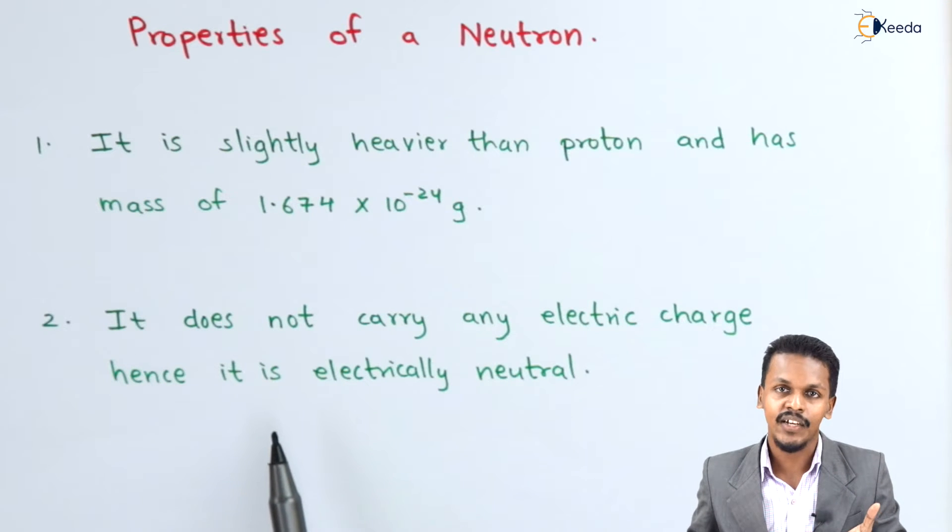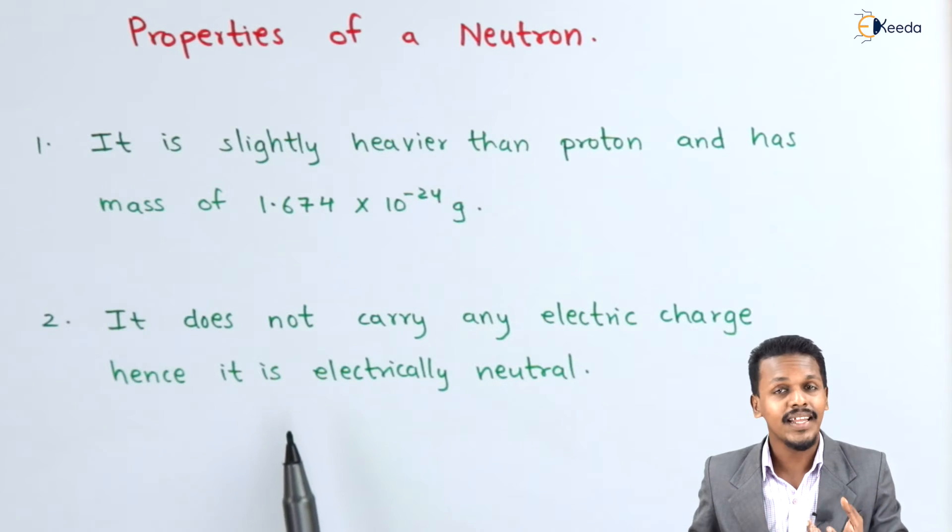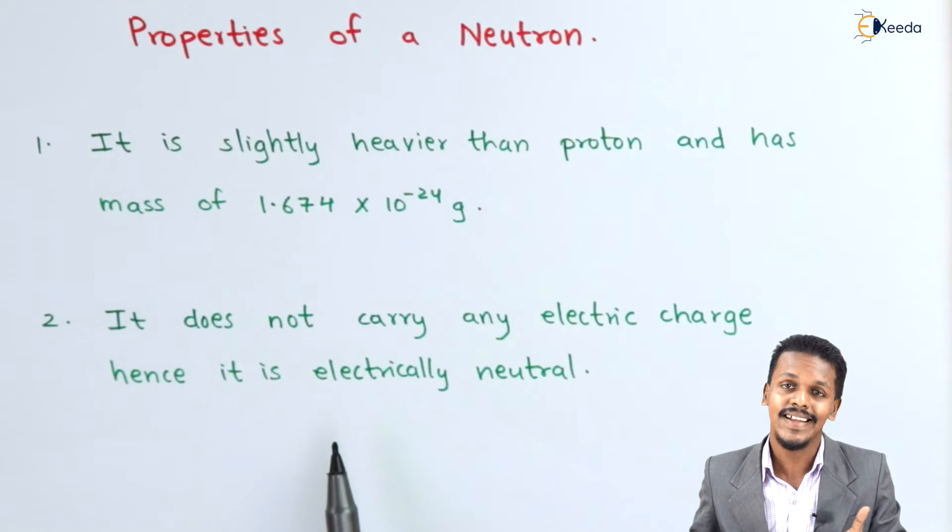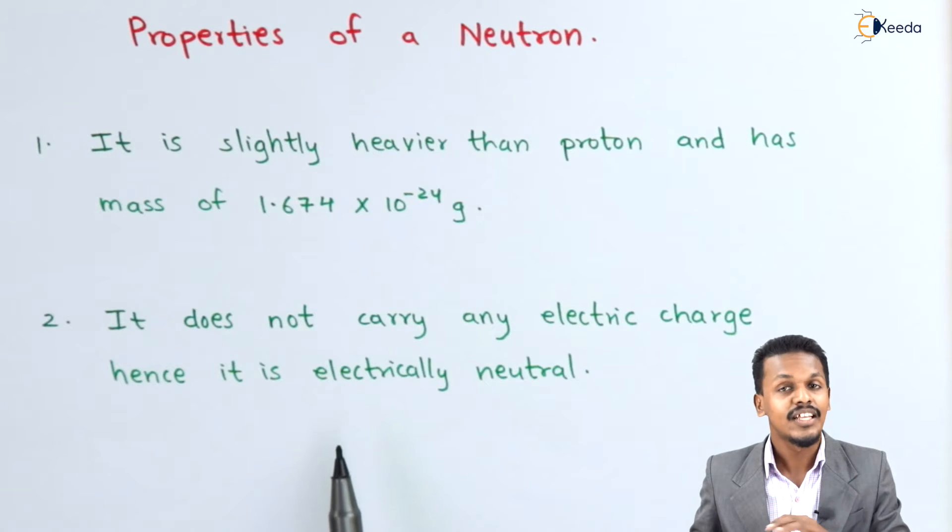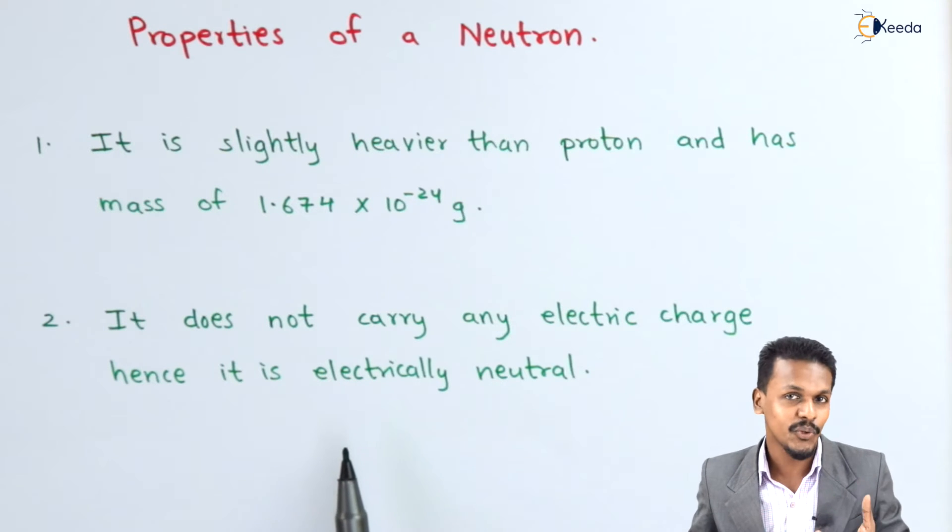We discussed in previous topics that cathode rays consist of negatively charged electrons, and anode rays or canal rays consist of positively charged particles. But the neutron discovered by Chadwick is chargeless or electrically neutral.